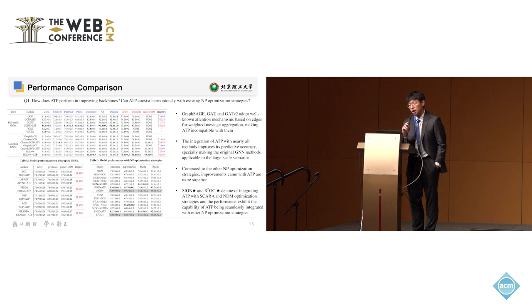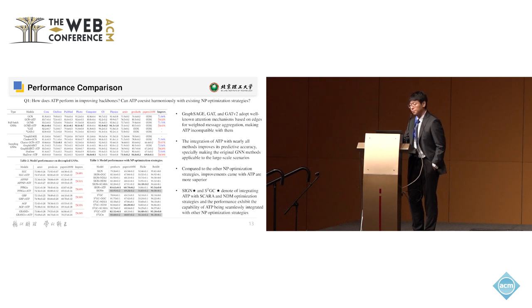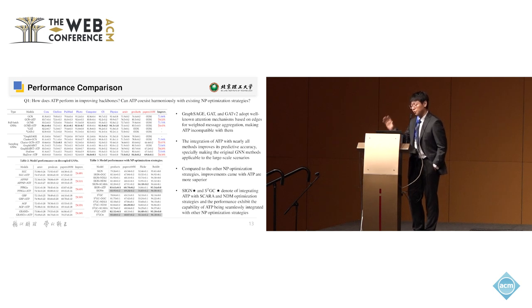In experiments, as a plug-and-play optimization strategy, our method combined with existing GNN models can largely improve their performance. For example, combining with Cluster-GCN, we can make this model applicable to large-scale scenarios. We also compare against other node-wise propagation optimization strategies by combining them into one single model, SIGN, and ATP achieves the best performance boost. Furthermore, integrating ATP with SIGN* and S2GC*, replacing their unified graph operators with ours, yields much better performance.